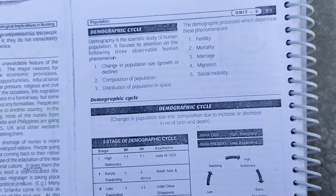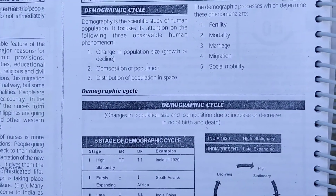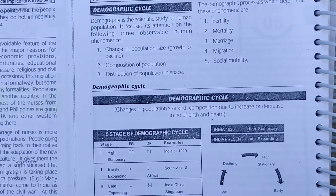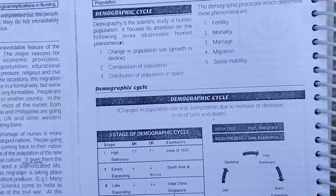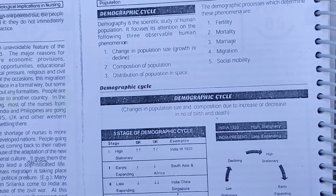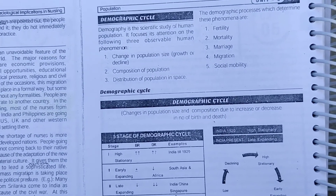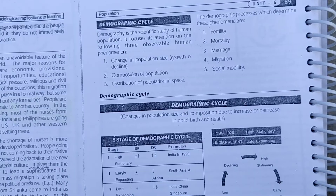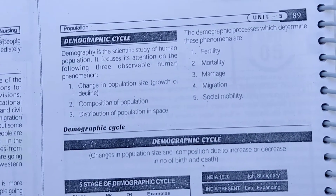In demography, we study three things: first, change in population size — growth or decline; second, composition of population — which includes age groups such as elderly, adults, children, young people, males, and females; and third, the distribution of population in space, meaning how population is distributed across a given area.